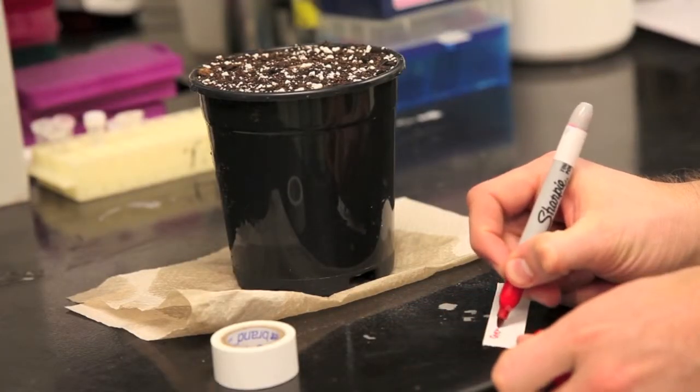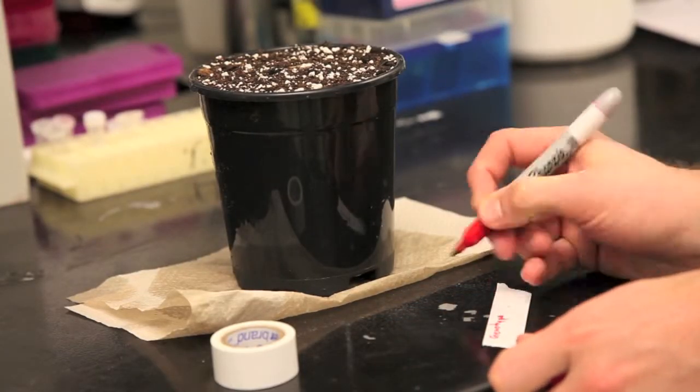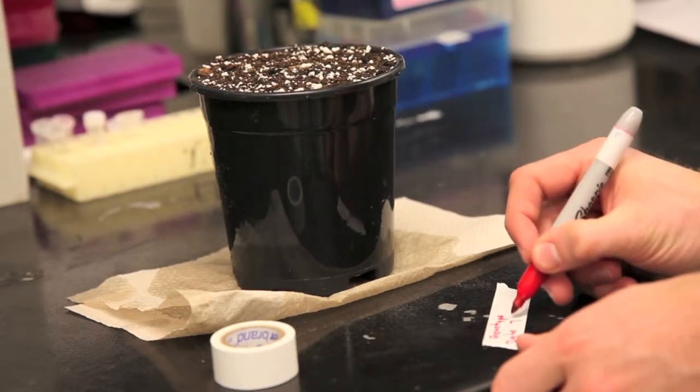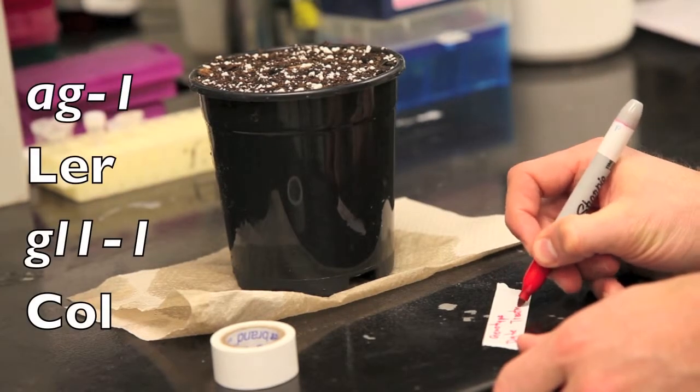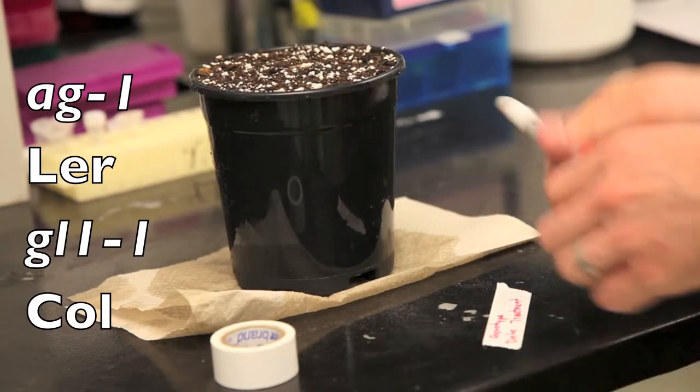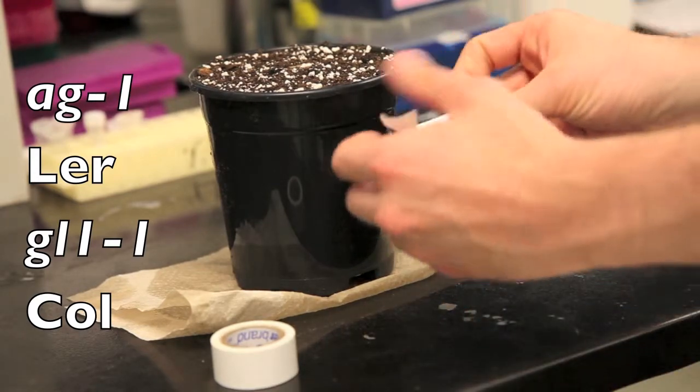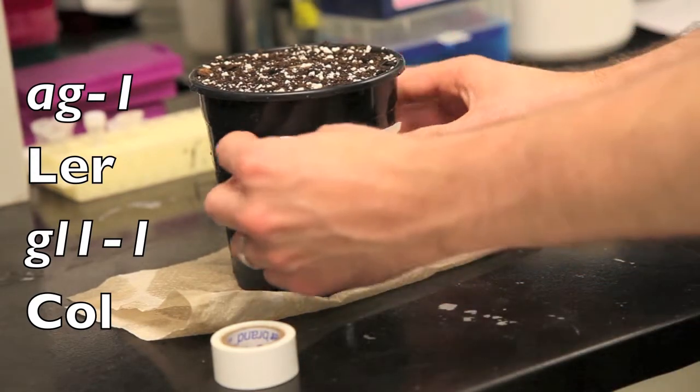As always, make sure to label each pot. Include your group number, the date, and of course the genotype of the seeds you're planting. In this experiment, you should have included AG1, Landsberg, GL1, and Columbia genotypes.